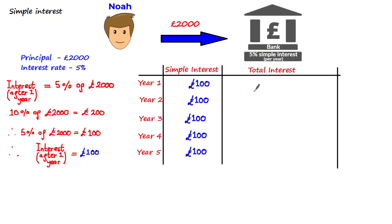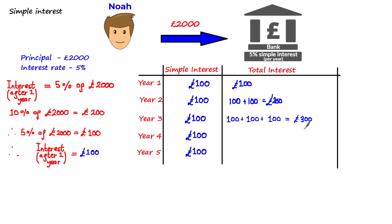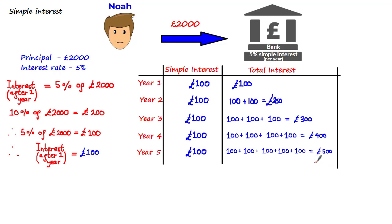So working from this column, we can work out the total interest after each year. After year 1, the total interest would be £100. After year 2, it would be £100 plus £100, giving us £200. After year 3, it would be £100 plus £100 plus £100, which is £300. And hopefully you can see that to get the total interest for the next year, we just keep adding £100. So the total interest that Noah receives after 5 years is £500.